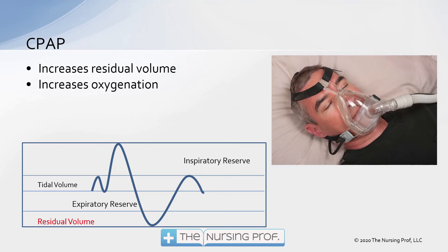CPAP is going to increase our residual volume, which then increases oxygenation. Looking at the diagram on the left showing lung volumes: normal breathing at rest is your tidal volume, which is a small part of total lung volume but circulates air toward the expiratory reserve and residual volume. You can take a very deep breath — that's your inspiratory reserve, which is larger than the tidal volume. In other words, we have room to manipulate the patient's tidal volume if we need to move more air.